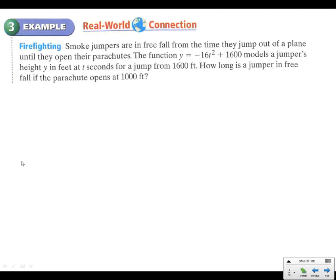Let's take a look at a real-world connection here. Smoke jumpers are in free fall from the time they jump out of a plane until they open their parachutes. And the function y equals negative 16t² + 1600 models the jumper's height y in feet at t seconds for a jump from 1600 feet. How long is a jumper in free fall if the parachute opens at 1,000 feet? Let's take a look at this. We've got our equation: y equals negative 16t² + 1600. And we want to figure out how long to get to 1,000 feet. So we'll put 1,000 in for y.